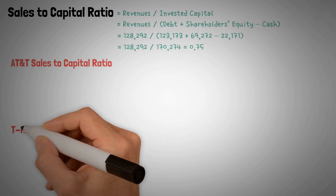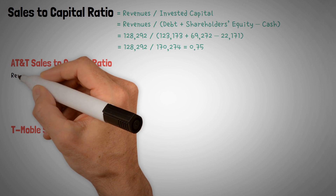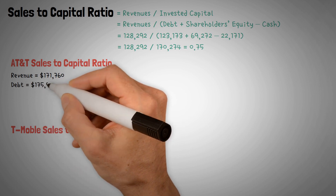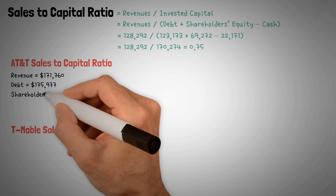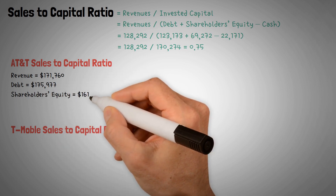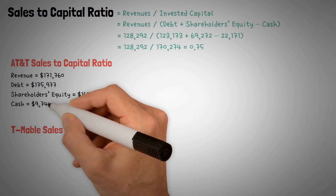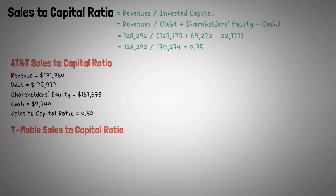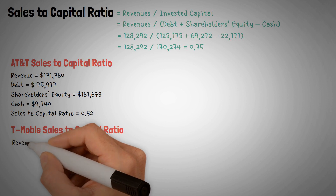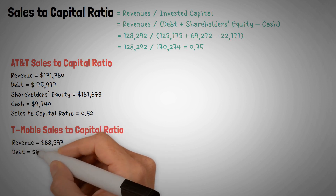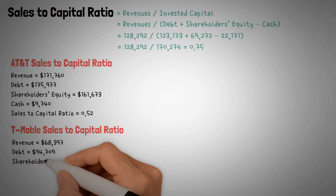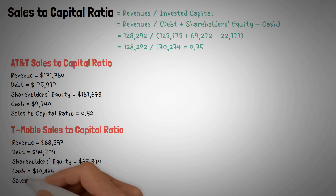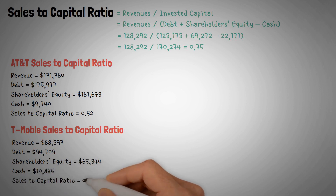Now doing the same for AT&T and T-Mobile so we can compare all three companies. AT&T: Revenue $171,760, debt $175,977, shareholders' equity $161,673, cash $9,740, giving a sales-to-capital ratio of approximately $0.52. T-Mobile sales-to-capital ratio: $0.45.